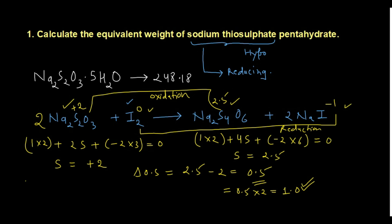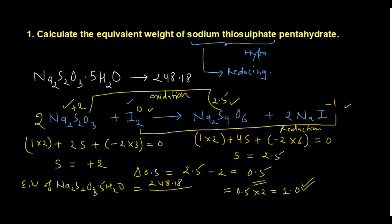The change in oxidation state is 1, so the equivalent weight of Na₂S₂O₃·5H₂O equals its molecular weight divided by its n factor: 248.18 / 1 = 248.18. If measured in grams, the unit is gram equivalent weight; otherwise it is simply a number.